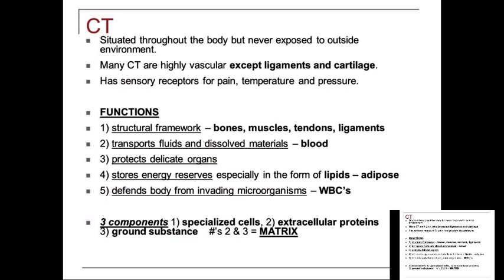Functionally, connective tissue makes up the structural framework of the body — muscles, bones, tendons, and ligaments all connect everything. It transports fluids and dissolved materials. Blood is connective tissue; you don't just want to think of solid structures because blood is actually considered liquid connective tissue. It protects delicate organs. We have fat or adipocytes or adipose that surrounds our organs to protect them. It stores energy, especially in the form of lipids.